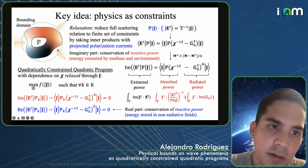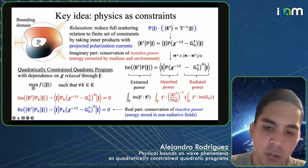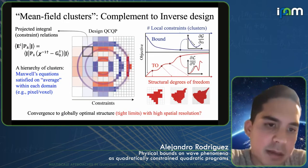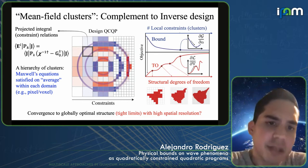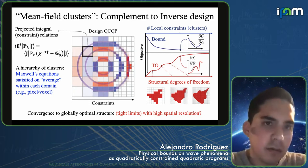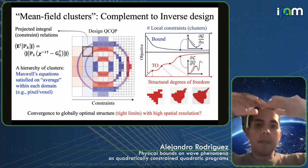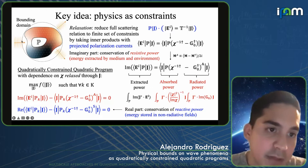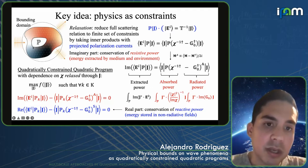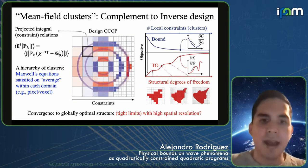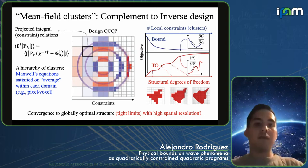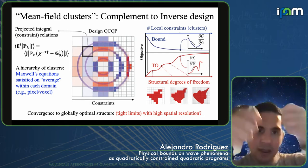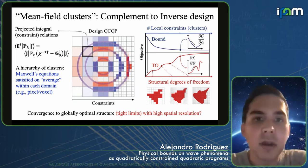You're allowed to take any projection operator here, meaning you're allowed to project these integral relations over any domain within your design domain. This really reminds you of the same kinds of techniques you see in mean field cluster theory. You're solving a quadratic program with a set of projected integral constraints that you get to define within your computational cell. For instance, you can take this projection operator to be the entirety of your design domain — basically just taking a zeroth-order mean field average of Maxwell's equation over the entire domain, enforcing that net global power conservation is satisfied.